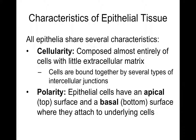Epithelial tissues also have polarity — they have an apical surface and a basal surface. The apical surface is exposed to the space; for skin on your hand, it's the outer surface you can see. The basal surface is deeper, anchored to the underlying connective tissue. The basal surface is what attaches to the basement membrane.